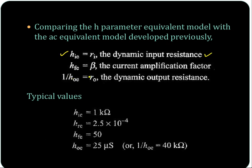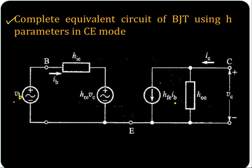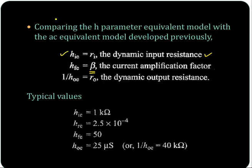HFE is equal to beta — you have the HFE times IB current source here. And 1 by HOE is equal to R0. Since HOE is admittance, 1 by HOE equals R0, the dynamic output resistance.